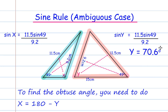Going back to our original calculation, it was actually Y that was 70.6, not X. So we'll take 70.6 from 180, which will give us 109.4 degrees.